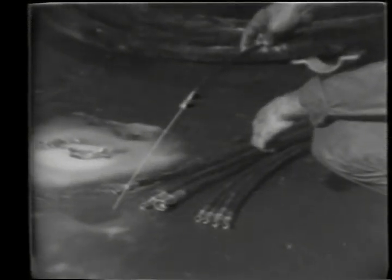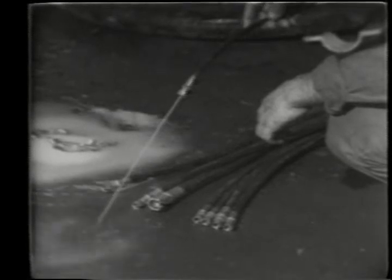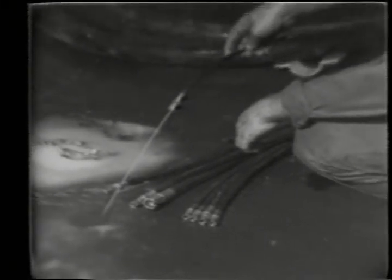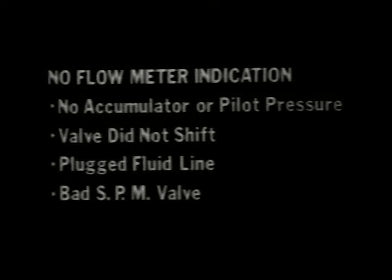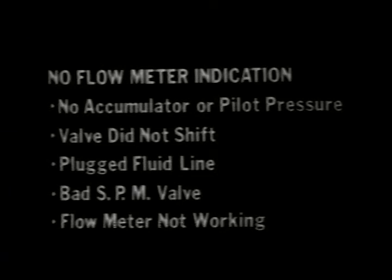If you have checked all connections and the pressure in the system is good, then the final thing to do is to pull the pod and check the pilot lines for sludge which may have settled out of the hydraulic fluid, or for air in the lines. This can be accomplished by disconnecting each line at the pod one at a time. As each line is disconnected, it should be flushed out by forcing new fluid through it. Another malfunction you may encounter is no flow meter indication when a function button is pushed. This can be caused by: no accumulator or pilot pressure; failure of the valve on the hydraulic control manifold to shift; a pilot or main fluid line plugged with trash; a bad SPM valve; or the flow meter is not working properly.